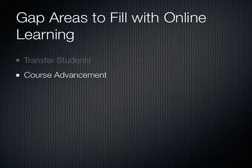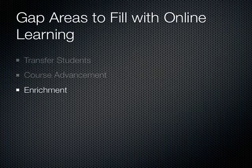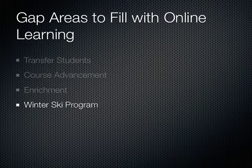Students who want to advance their learning and take college courses while still in school could move ahead and attend Dartmouth during their senior year. Students who have an interest in a specific area may want to earn credits through an enrichment program. Hanover High School also has a Ford Sayre competitive ski program that causes students to miss afternoon classes and longer trips for three months during the ski season.